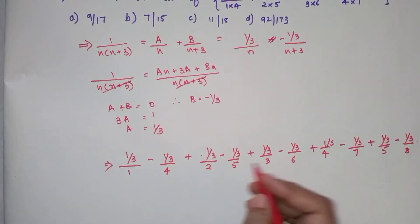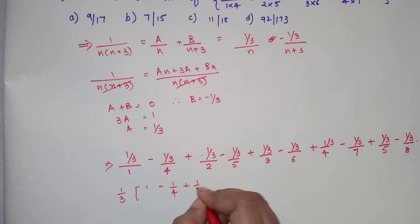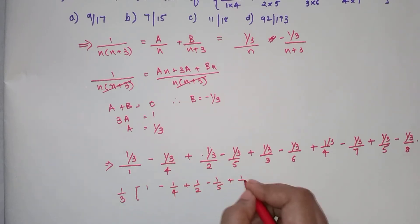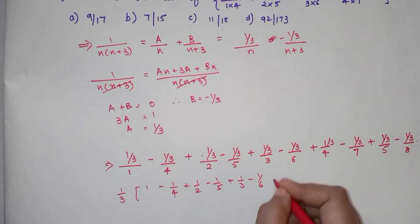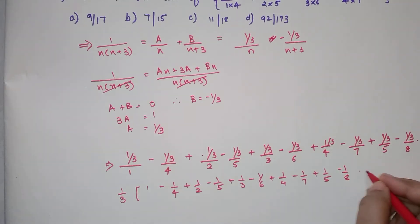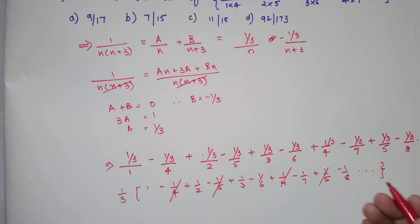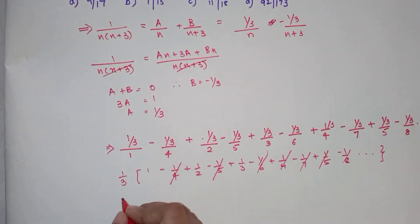So here I can take 1 upon 3 common: 1 upon 3 times (1 minus 1 upon 4 plus 1 upon 2 minus 1 upon 5 plus 1 upon 3 minus 1 upon 6 plus 1 upon 4 minus 1 upon 7, and so on). If you look, these terms are getting cancelled, so when you are actually going ahead, you will realize that almost all of these terms are getting cancelled.